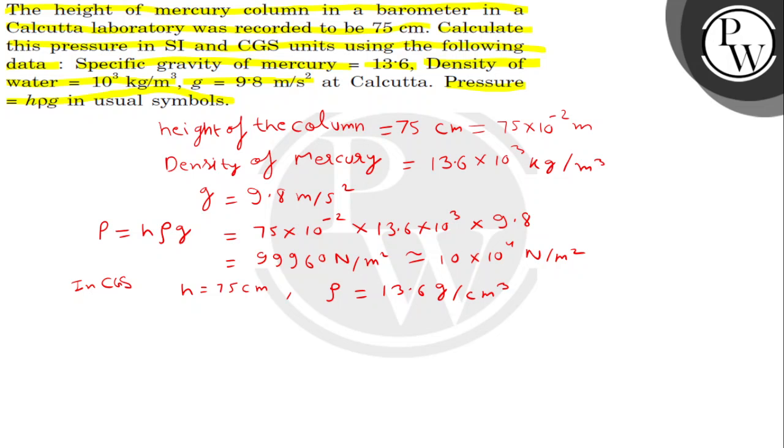G हमारे पास क्या हो जाएगा 980 centimeter per second square, so हम P निकालेंगे यहाँ से. H-Rho-G formula is same, यह क्या हो जाएगा 75 into 13.6 into 980. यह भी निकाल के आएगा हमारे पास